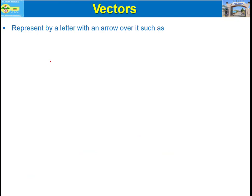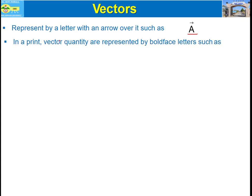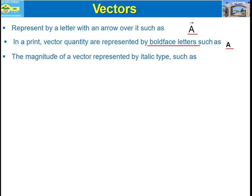A vector can be represented by a letter with an arrow over it — this is suitable for handwriting. However, in print, a vector most of the time can be represented by a bold-faced letter such as the letter A. The magnitude of a vector can be represented by an italic letter such as A.